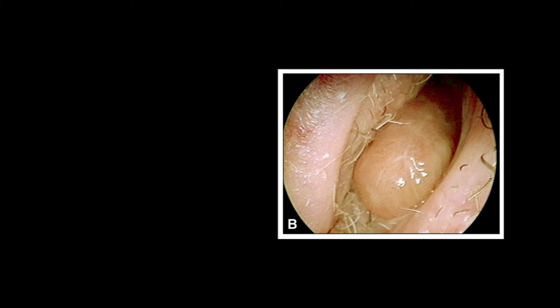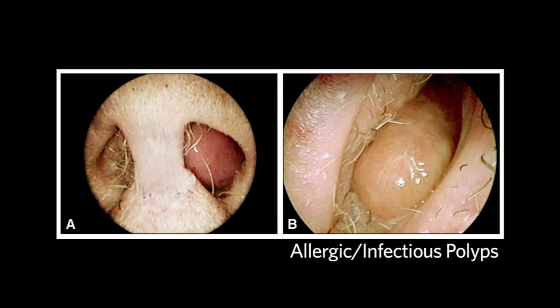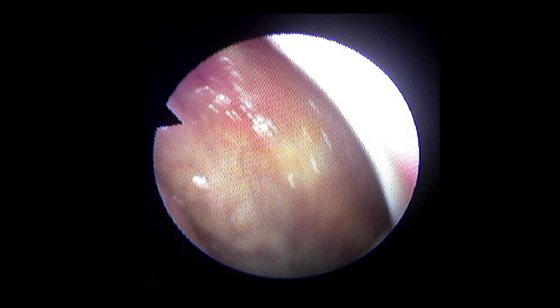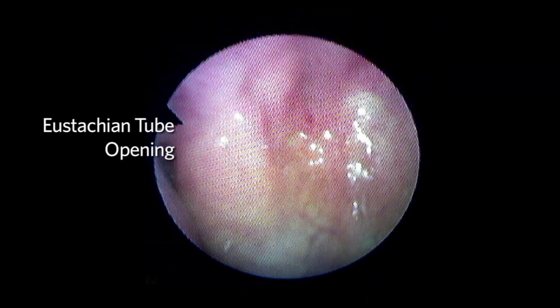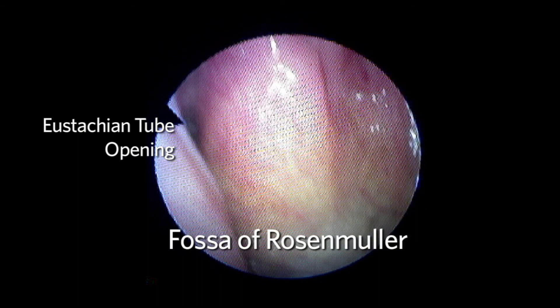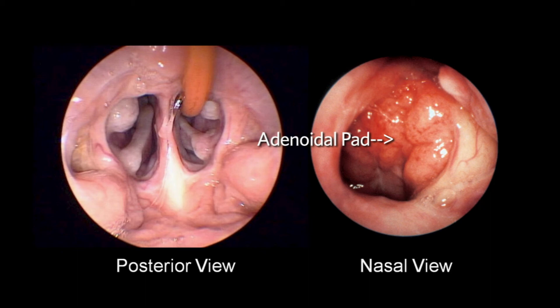Nasal polyps, however, can be so large as to obstruct the entire nasal cavity. Allergic or infectious polyps tend to be pale in color. If they are red or firm, it may suggest a tumor. Occasionally, one may see the superior turbinate on nasal endoscopy. If you continue posteriorly along the floor of the nose, the opening of the eustachian tube is seen laterally. This area is known as the fossa of Rosenmüller. As the nasopharynx is seen, one may view the adenoidal pad if it still exists.